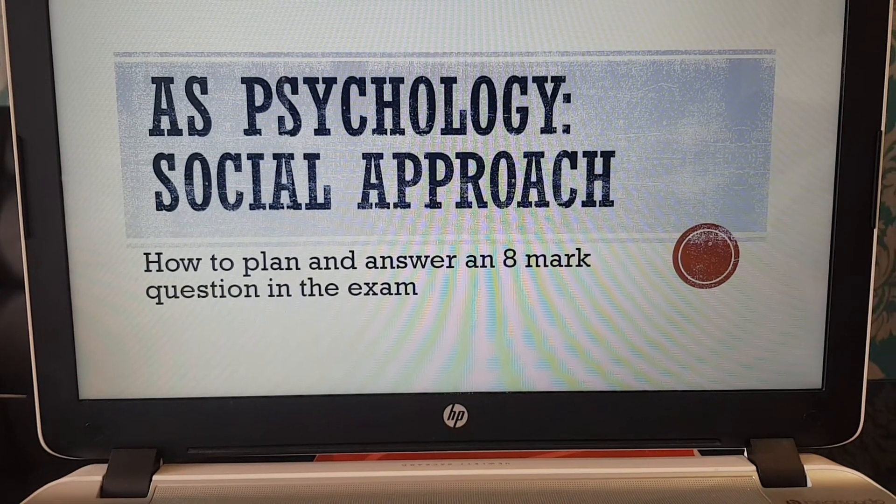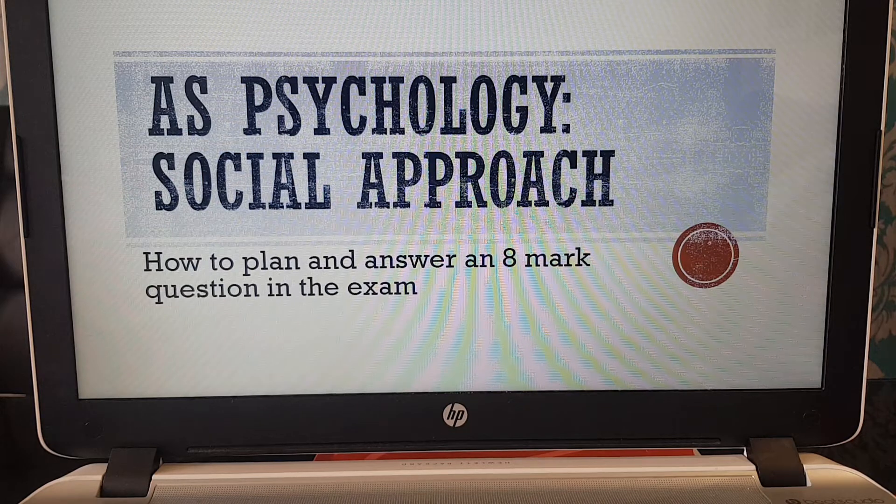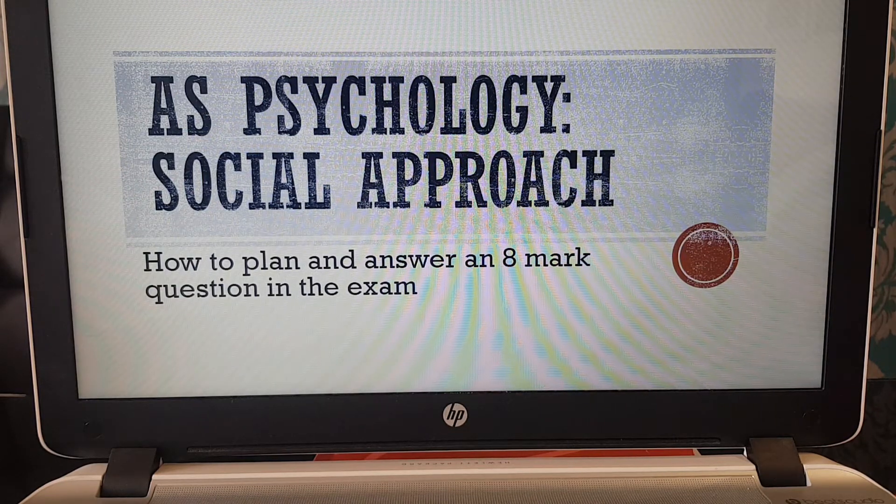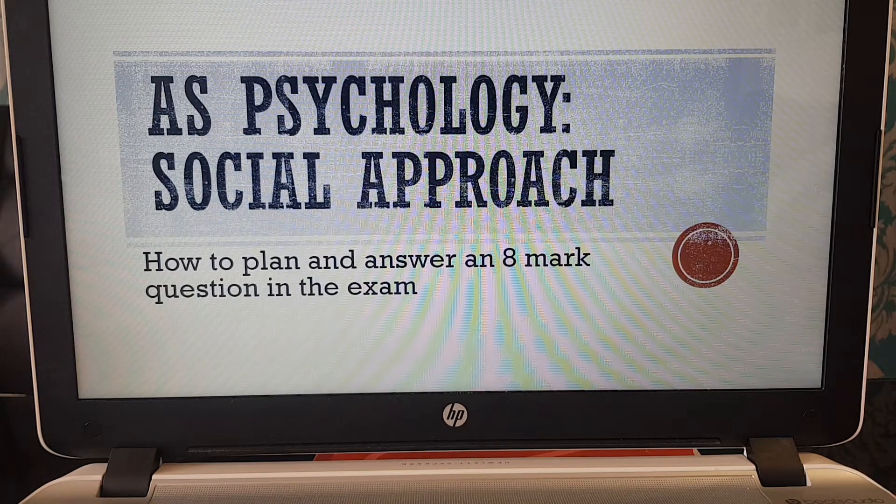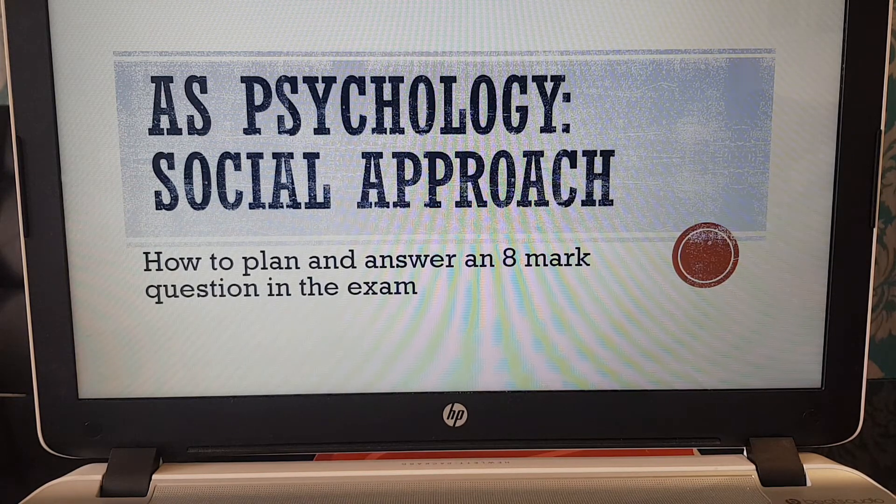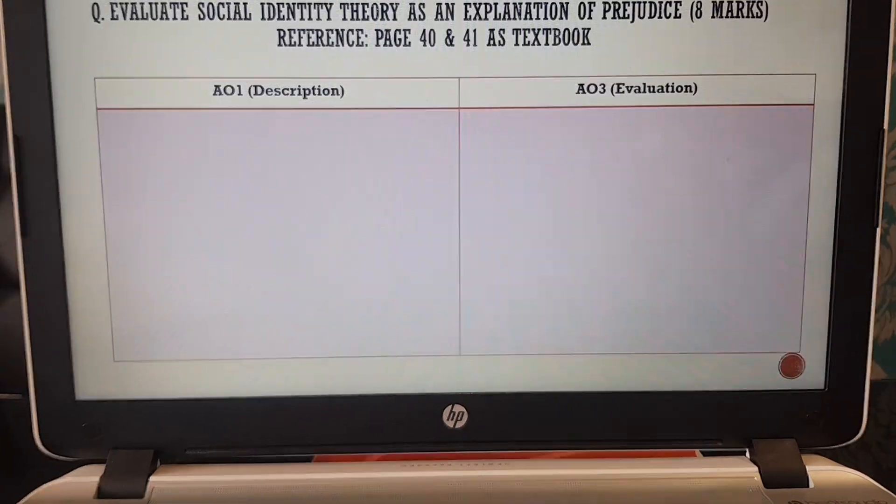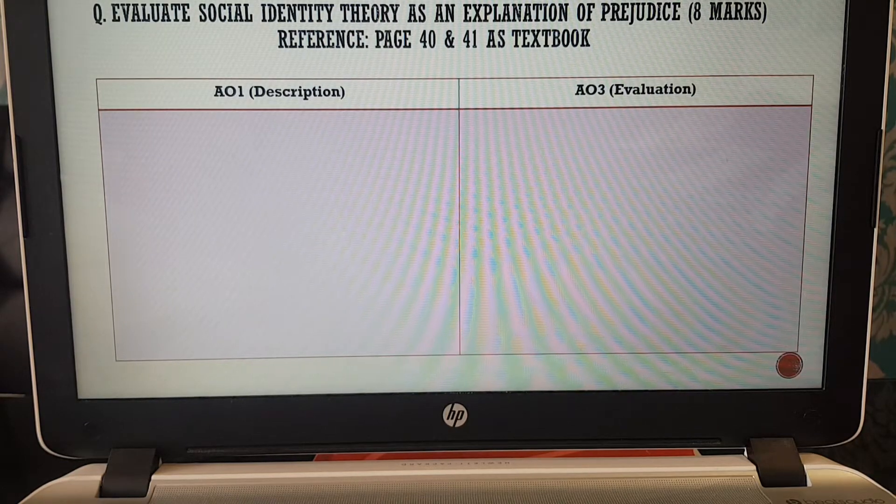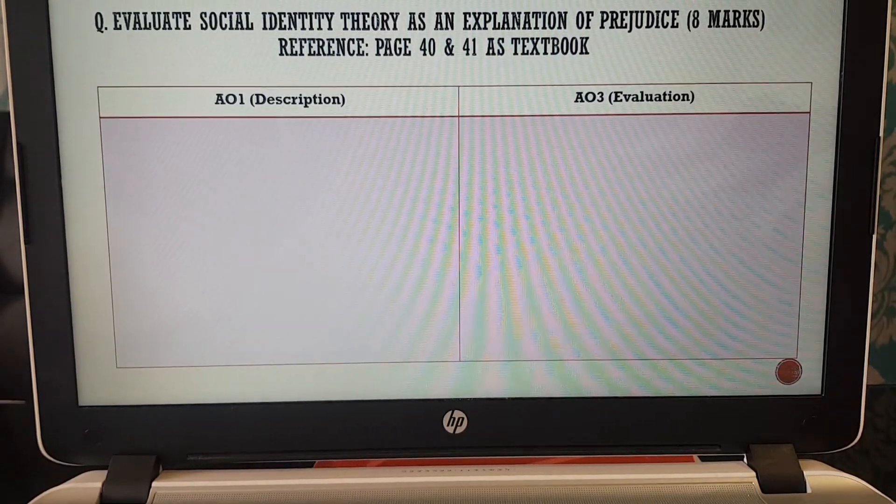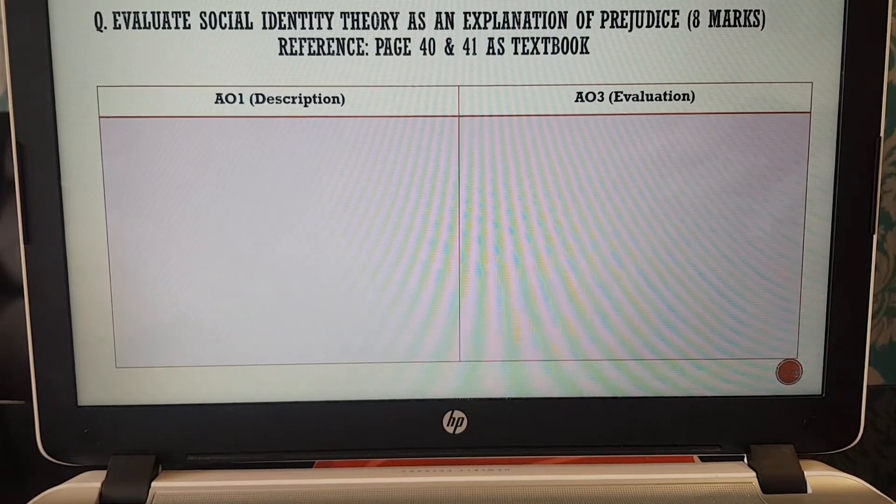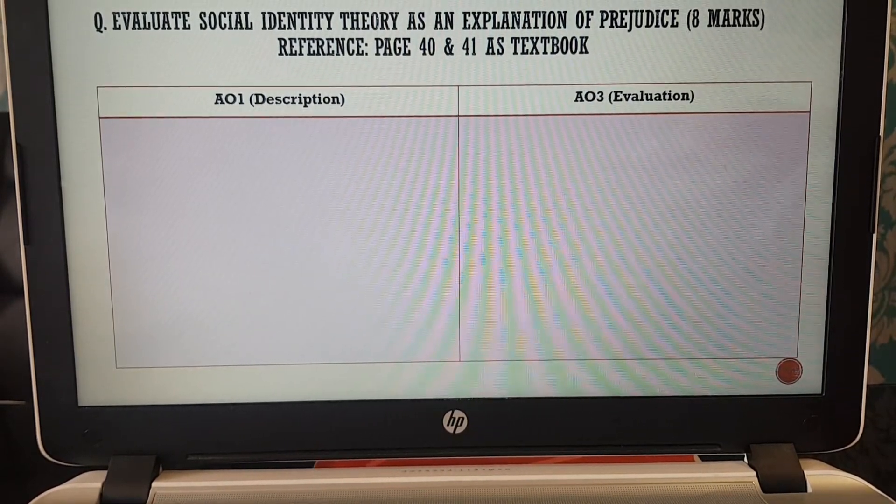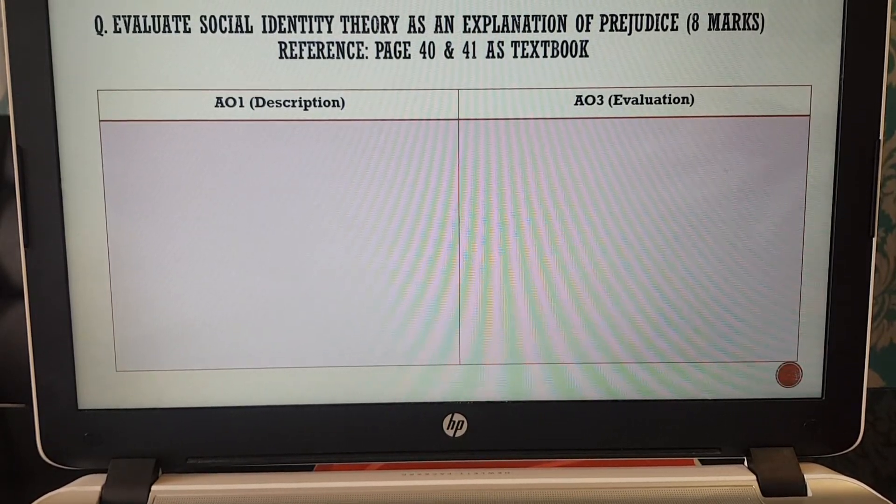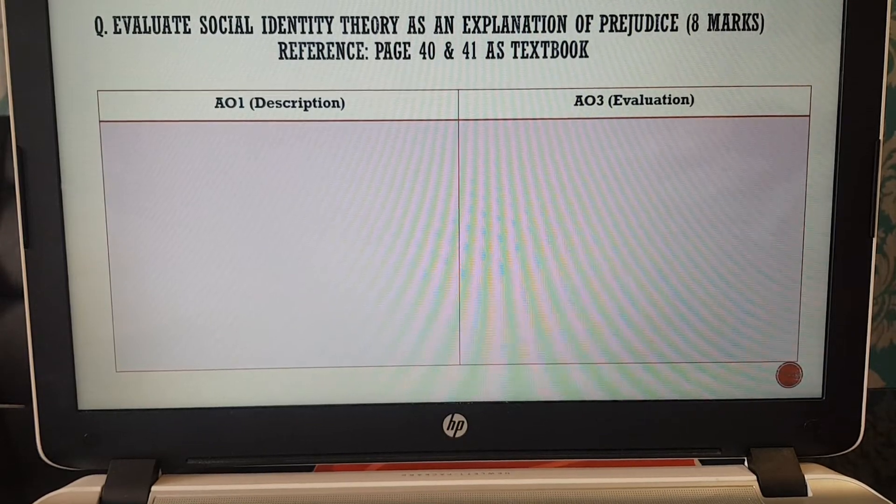Hi everyone, so we are going to have a look today at how to plan, structure, and answer an eight-mark exam question for AS social psychology. The question that I've chosen is about prejudice. The question is: evaluate social identity theory as an explanation of prejudice, and this question is worth eight marks. Just for reference, it's page 40 and 41 in the AS textbook which covers the social identity theory.